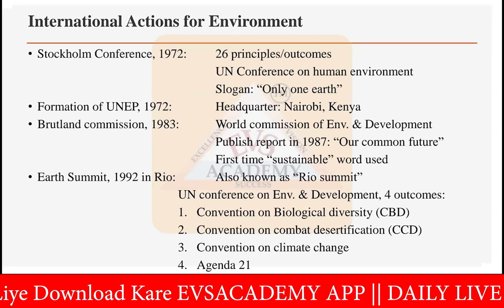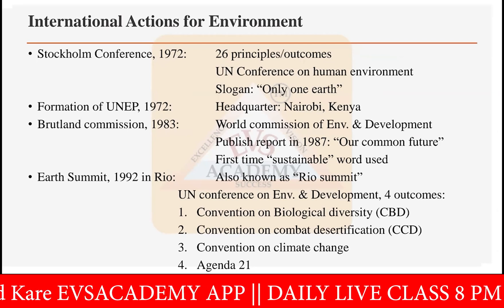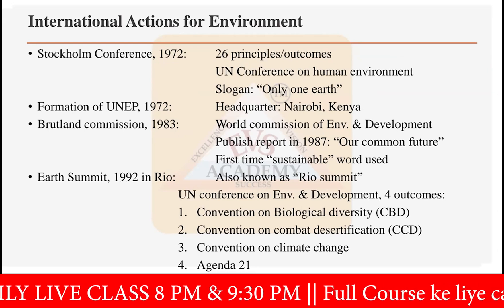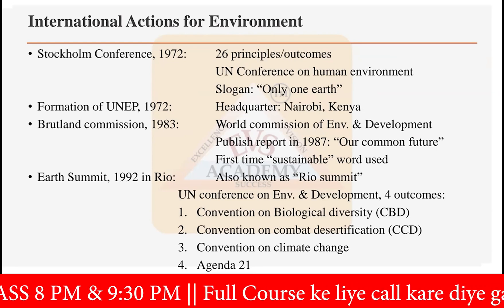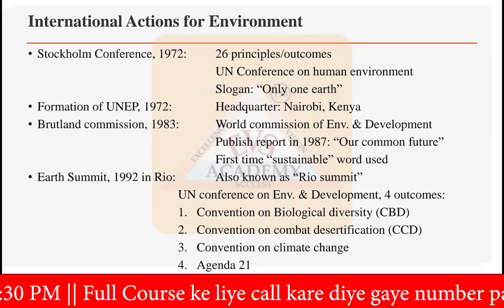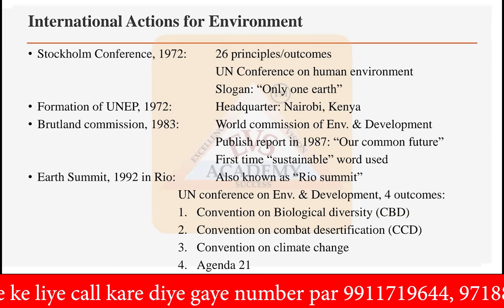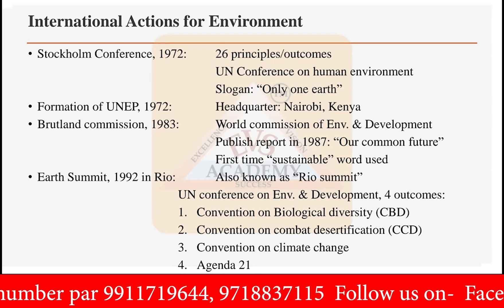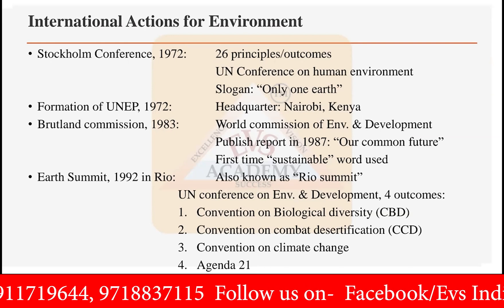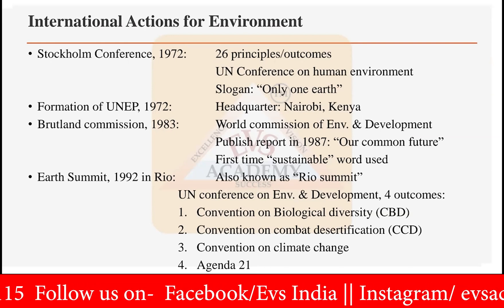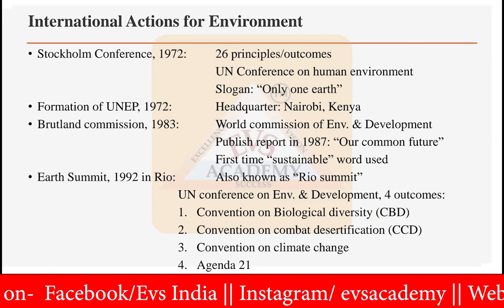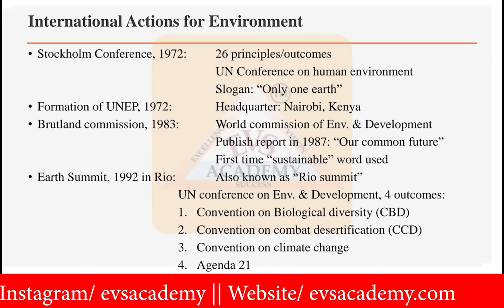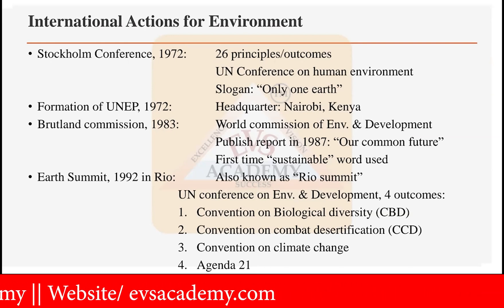What are the international actions taken by the United Nations? The United Nations is an assembly for all the major countries of the world where all problems as well as developments are discussed. The very first major event was the Stockholm Conference, held in the year 1972. Twenty-six principles and outcomes were decided under this conference, which was called the United Nations Conference on the Human Environment.